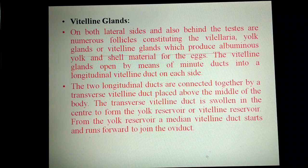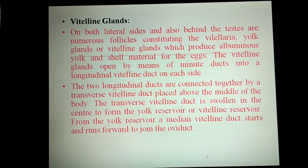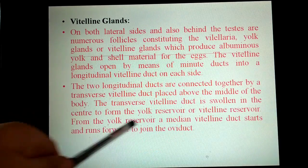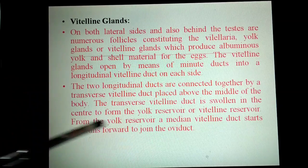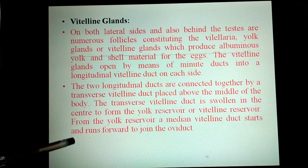The vitelline glands open into minute longitudinal vitelline ducts on each side. The two longitudinal ducts are connected together by a transverse vitelline duct placed above the middle of the body. The transverse vitelline duct is swollen in the center to form the yolk reservoir. From the yolk reservoir, a median vitelline duct starts and runs forward to join with the oviduct.